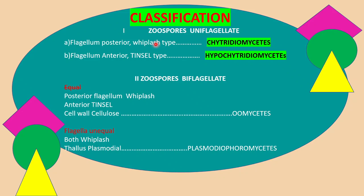In Chytridiomycetes, there is one posterior whiplash flagellum. In Hyphochytridiomycetes, the type of flagellum is tinsel and the position is anterior. In two other classes, zoospores have two flagella. In class Oomycetes, the posterior flagellum is whiplash and the anterior flagellum is tinsel. The most important and unique feature of Oomycetes is the presence of cellulose in their cell wall. In the fourth class, Plasmodiophoromycetes, both flagella are of whiplash type and the thallus shows plasmodial organization.